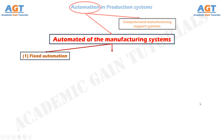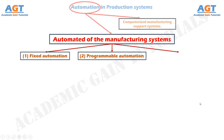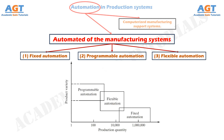Automated manufacturing systems can be classified into three basic types: one, fixed automation; two, programmable automation; and three, flexible automation. They generally operate as fully automated systems, although semi-automated systems are common in programmable automation. The relative positions of the three types for different production volumes and product varieties are depicted in this figure.